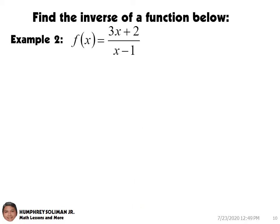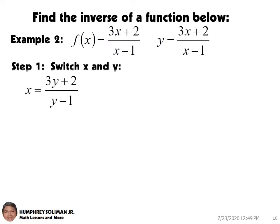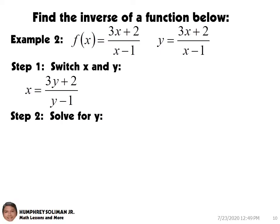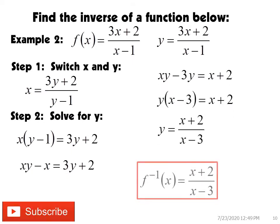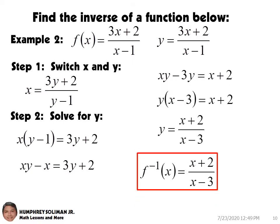We now have example number 2. We need to find the inverse of the function below. We can use the variable y instead of f(x). Step 1, we need to switch the places of the x and y variables. Step 2, we solve for y. This will give us the inverse function: f⁻¹(x) equals the quantity (x + 2) over the quantity (x − 3).